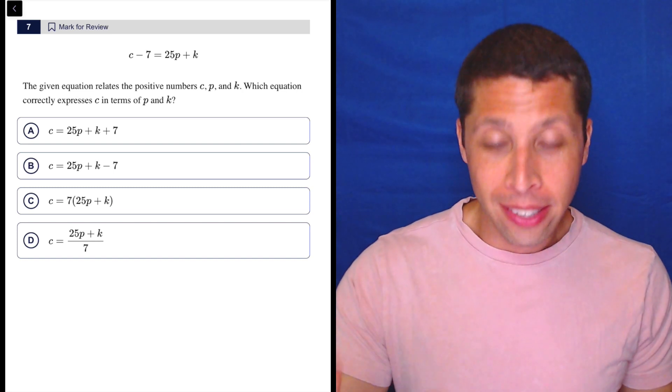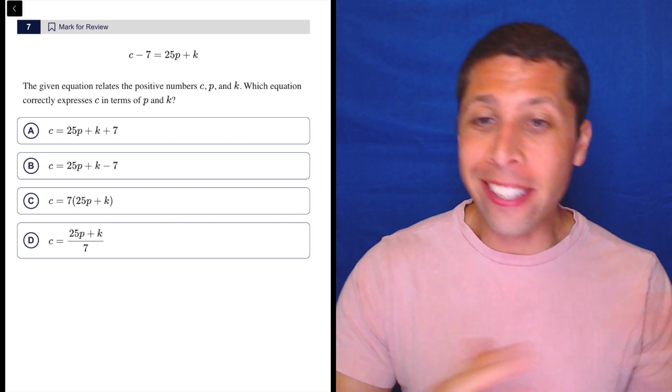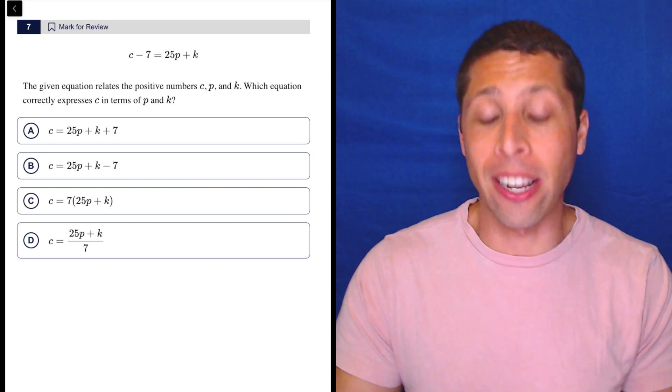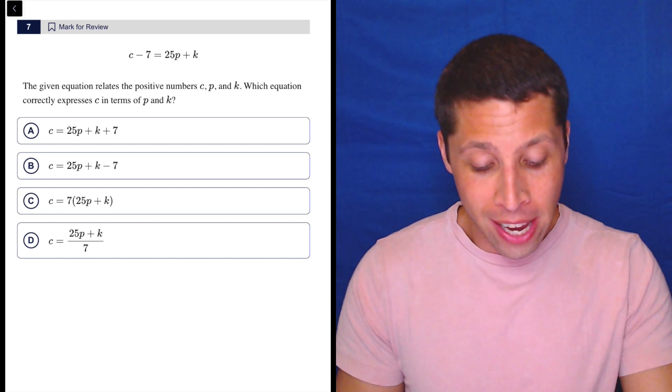We need to get C alone. It doesn't matter if there's P's and K's and other things. The goal is get C alone, so we have to get rid of anything that's attached to the C. There's only one thing attached and it's the seven.